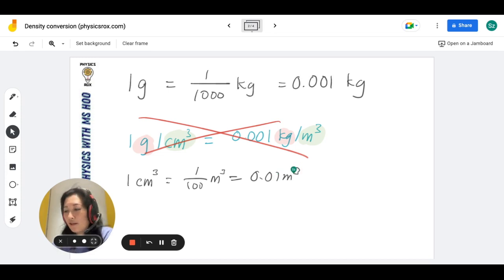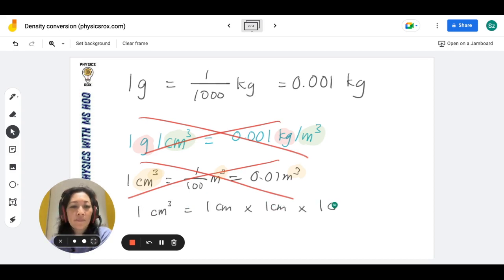Again, wrong. Why? Because you have forgotten to cube it. There's a cube there. You mustn't just take one part of the unit and make that the main focus and the only thing that you change. No, you've got to remember that the cube here means cm times cm times cm, three times. So 1 cm³ is actually 1 cm times 1 cm times 1 cm.